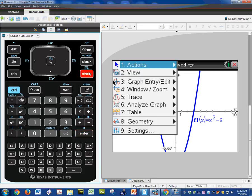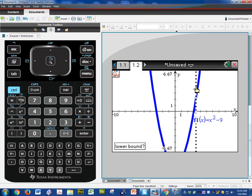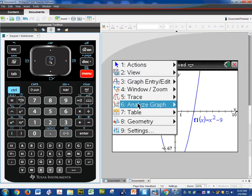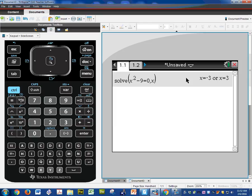Menu. Analyze graph. Zero. Go ahead and click once. Click again. And there's the first answer. Negative three zero. And you can repeat the process here for another one. So negative three zero and three zero. And I think that's what we had over here. So you can graph and solve that way, or you can use the solving feature here.